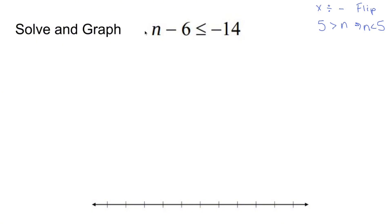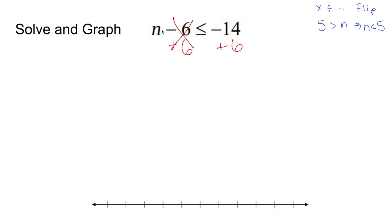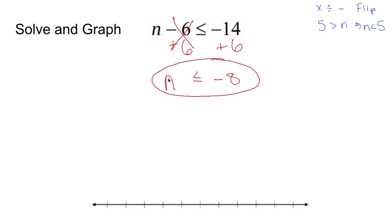Is n completely alone by itself? No — minus 6 is in the way. How do I get rid of subtracting 6? The inverse is adding 6, so I'm going to add 6 to both sides. Cross out, drop down the n, drop down the less than or equal to. Negative 14 plus 6 is negative 8. I've solved my inequality — no flipping was necessary.